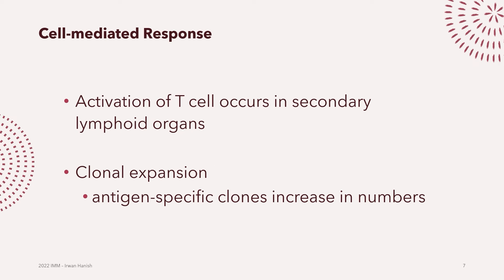If everything goes well, after passing through clonal deletion, once T cells encounter antigens presented by antigen-presenting cells, the T cells get activated — meaning the cells differentiate into various forms of T cell types. All of this happens in the secondary lymphoid organs. A key observation during this process is clonal expansion, where clones that bind to a pathogen proliferate and multiply in numbers.